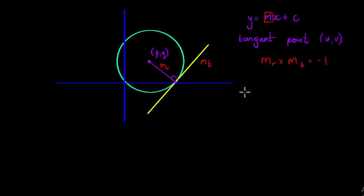So let's take the gradient of the radius. We find it simply by using the fact that we have two coordinates, so the change in the y values which is q minus v, divided by p minus u - just the change in the y values divided by the change in the x values.